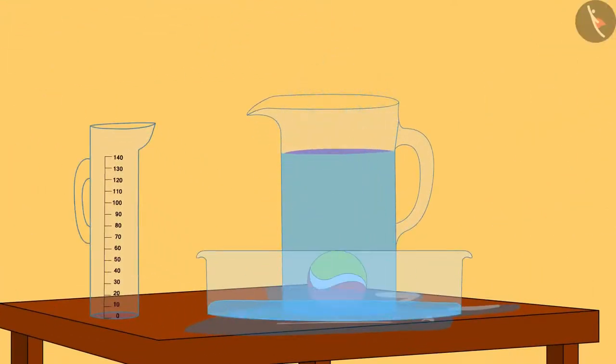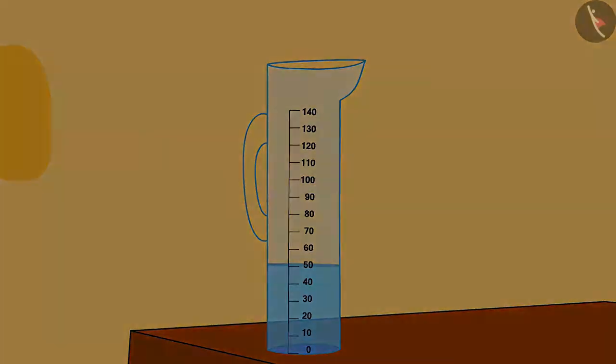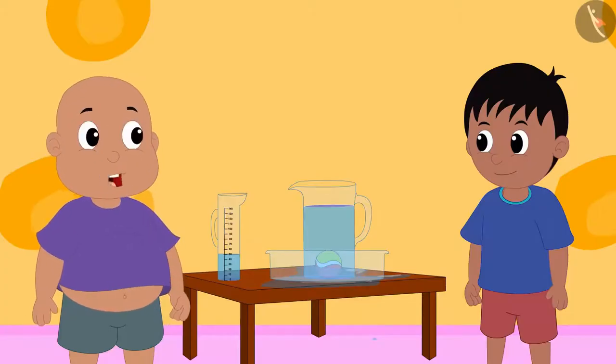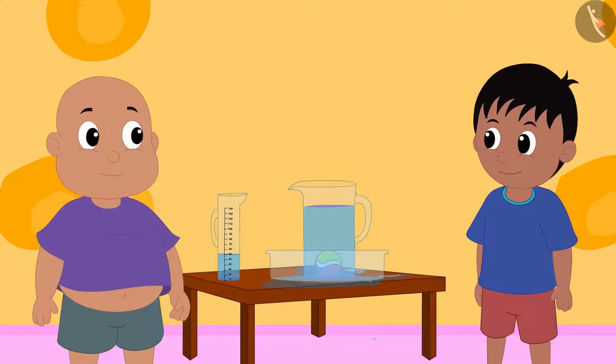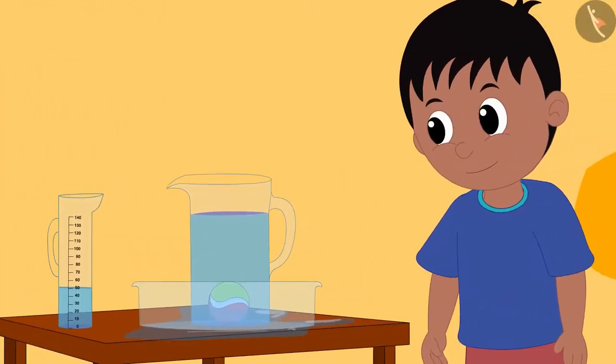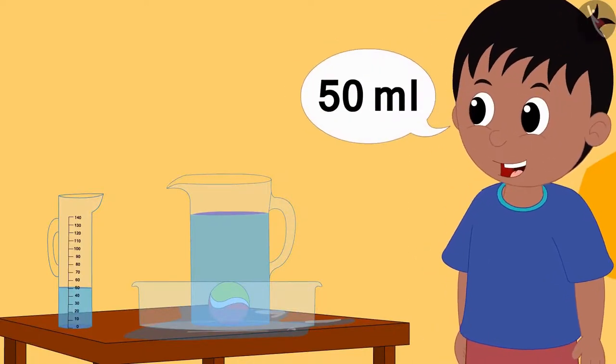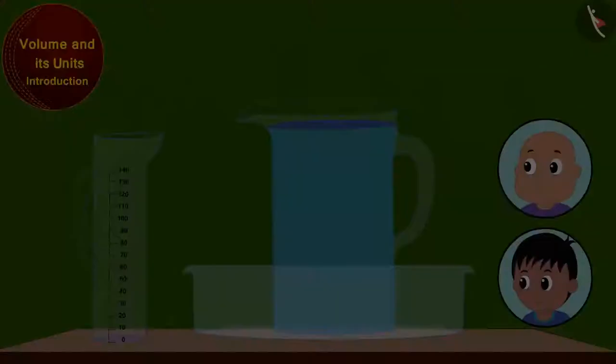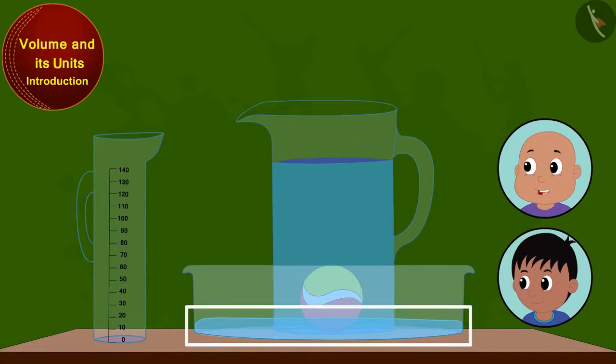Raju, can you tell me how much water is in the measuring cup? Looking at the surface of the water filled in the measuring cup, Raju said 50 milliliters. Look Raju, the ball tries to make its space in this jug, so the water spills out of the jug.